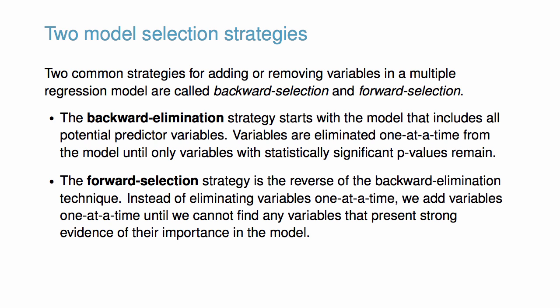The forward selection strategy is a reverse of the backward elimination technique. Instead of eliminating variables one at a time, we add variables one at a time until we cannot find any variables that present strong evidence of their importance in the model.